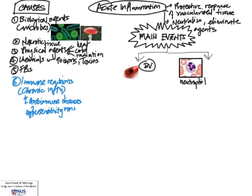Very often, another cell that plays a major role would be the macrophage. Macrophages are very important in amplifying the inflammatory response. So the two key players are blood vessels and cells.